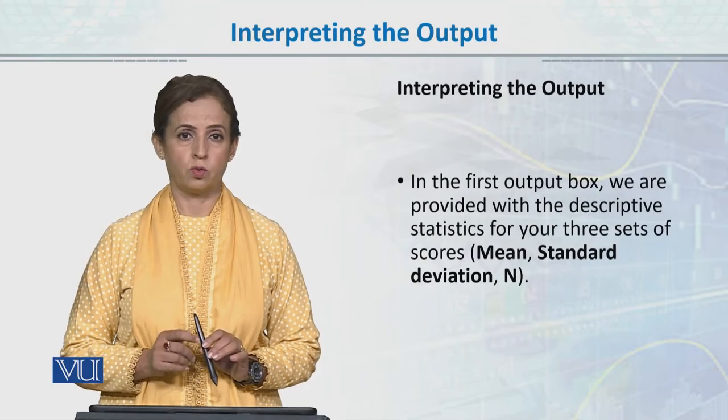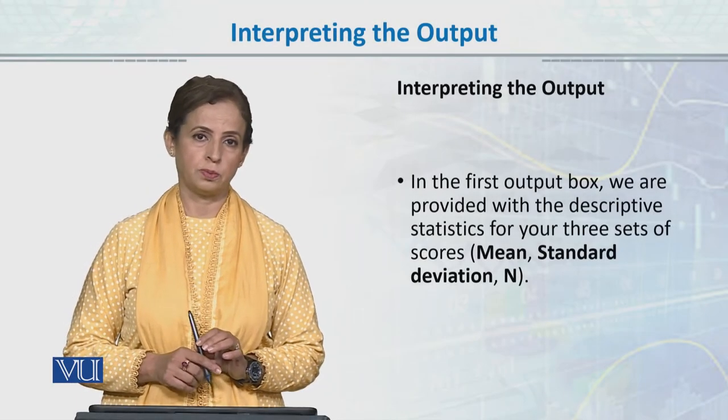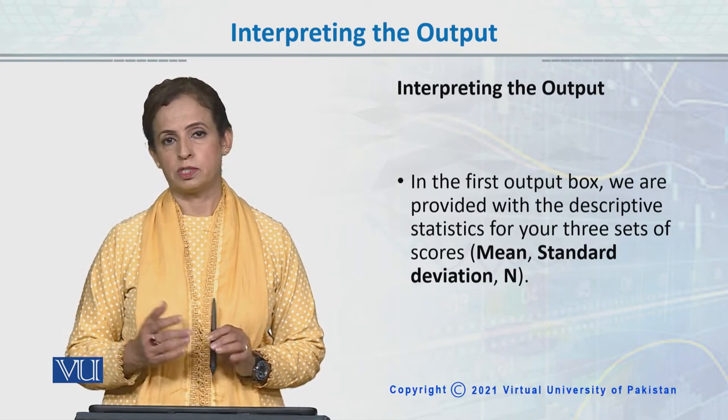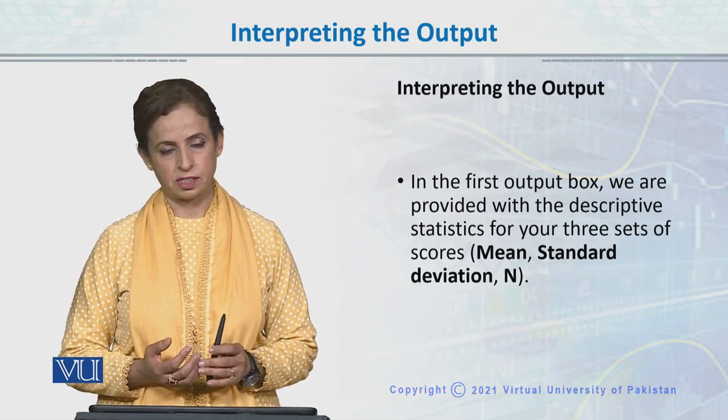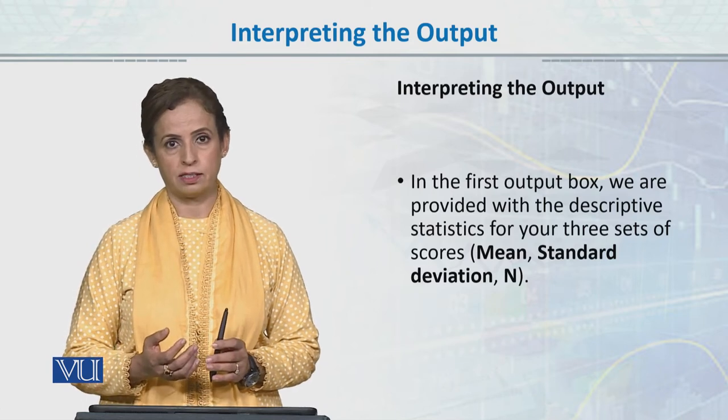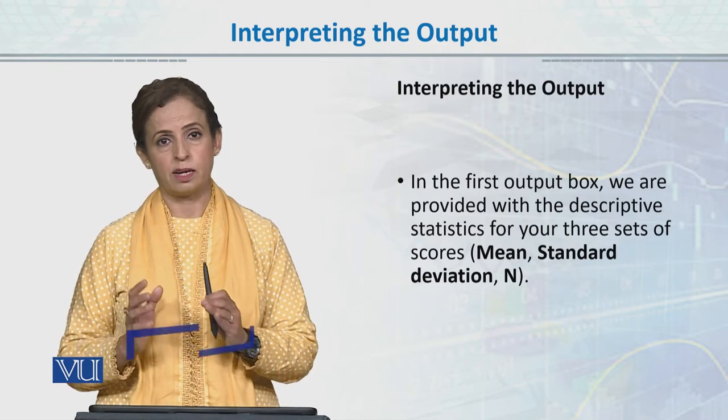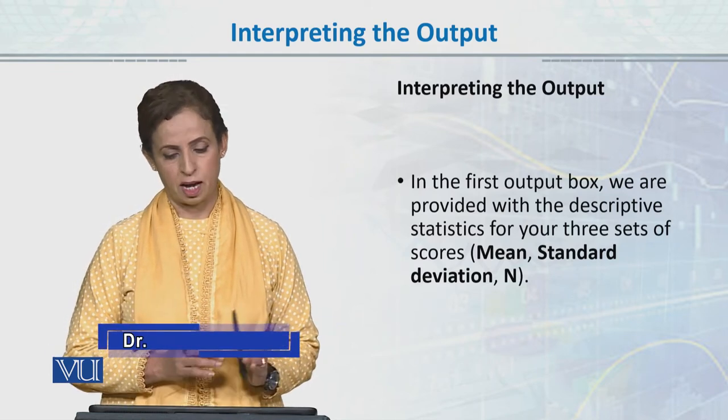We ran the analysis - one-way repeated measures ANOVA in SPSS with one independent variable with three levels. Now we will interpret the output. In front of the output and interpretation, I will show you one or two slides here, and then I will take you to the SPSS output file. All the tables I have copied and pasted here too.